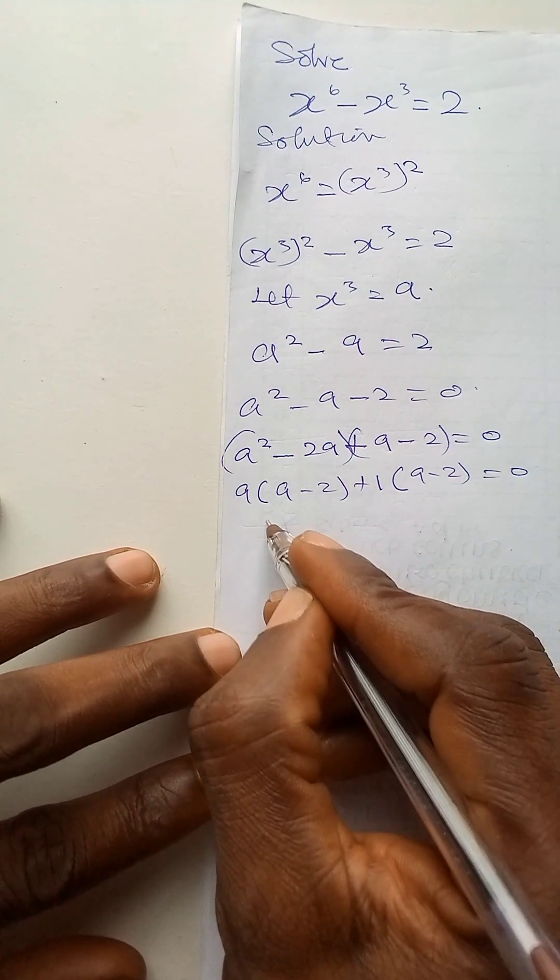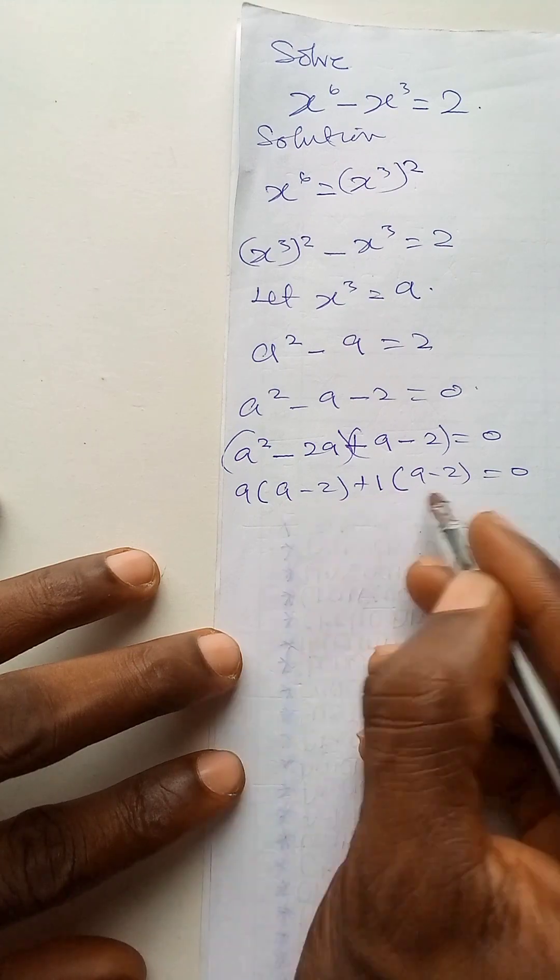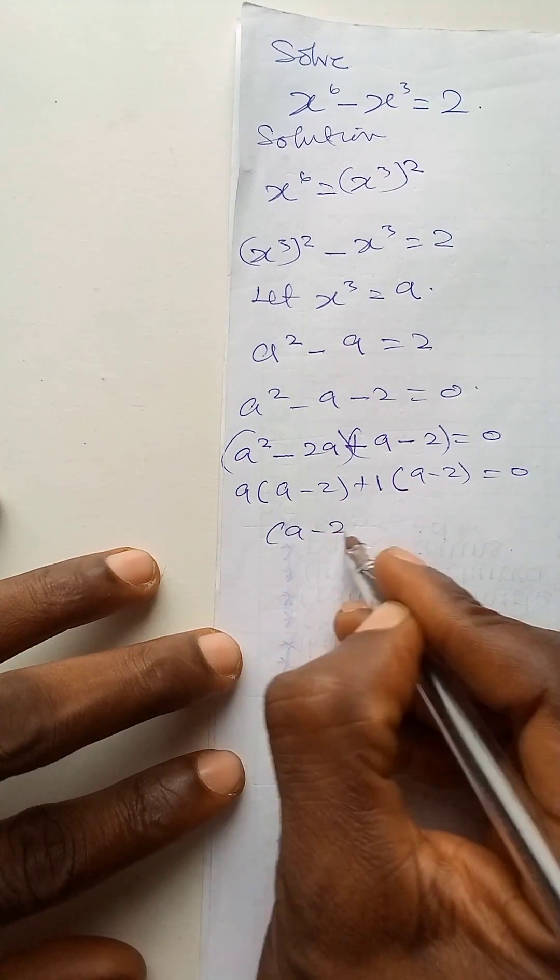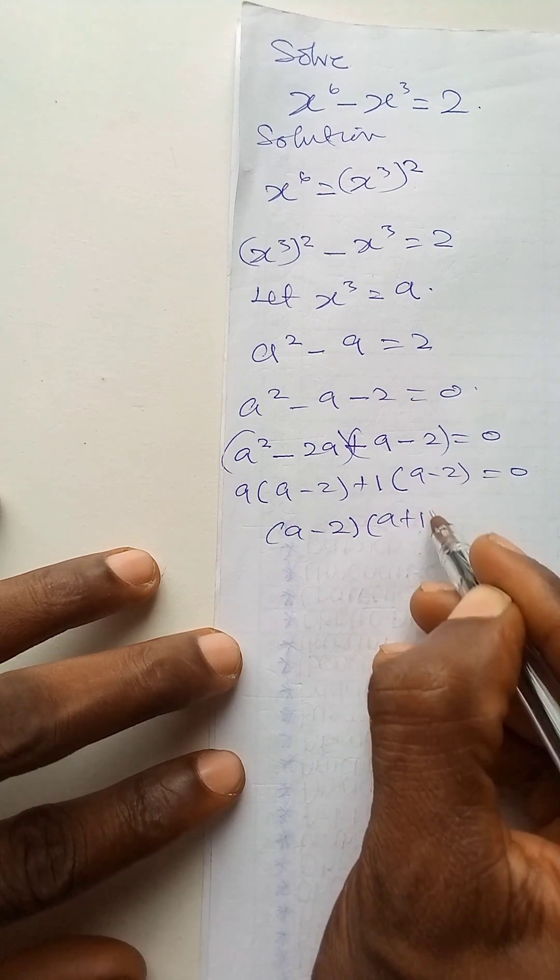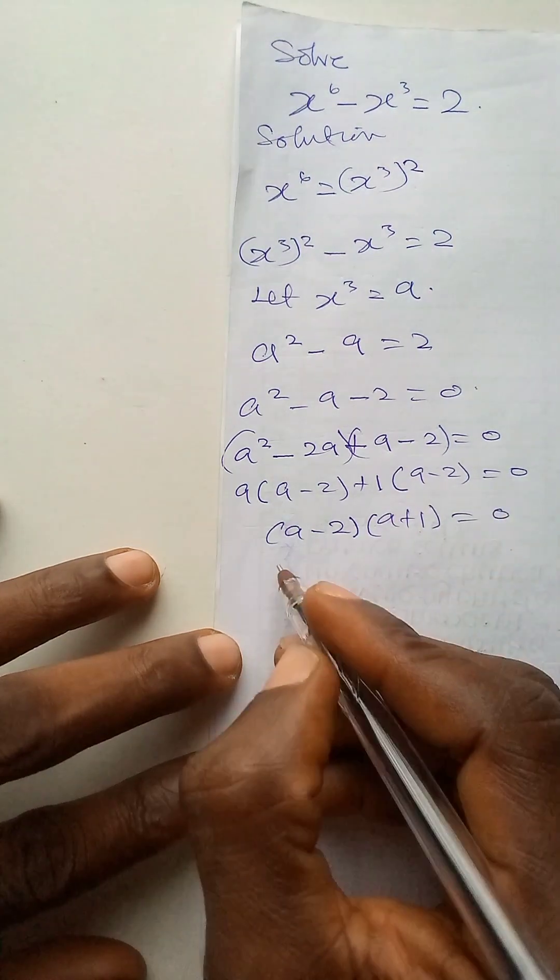Now we have two brackets that are the same here. I will take one, a minus 2, and put this other one in a bracket. a plus 1 is equal to 0.